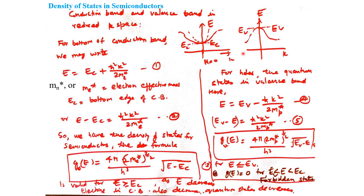Similarly for the valence band, the top of the valence band has energy E_V. For electrons below E_V (i.e., holes), E_V − E = ℏ²k² / (2m_p*), where m_p* or m_h* is the effective mass of holes. The density of states for the valence band becomes: g(E) = (4π / h³) × (2m_p*)^(3/2) × √(E_V − E), valid for E < E_V. In the conduction band formula it was √(E − E_C), while here it is √(E_V − E) for holes. For energies between E_V and E_C, the density of states g(E) = 0 — this is the forbidden gap.